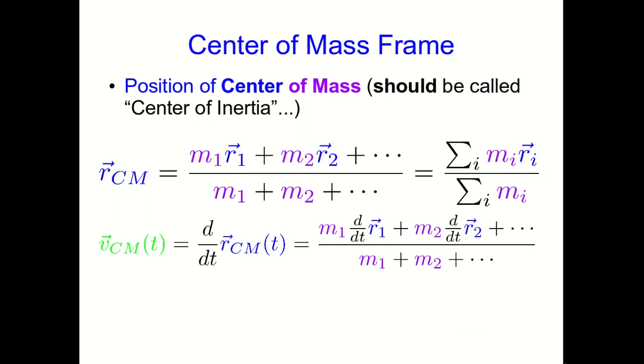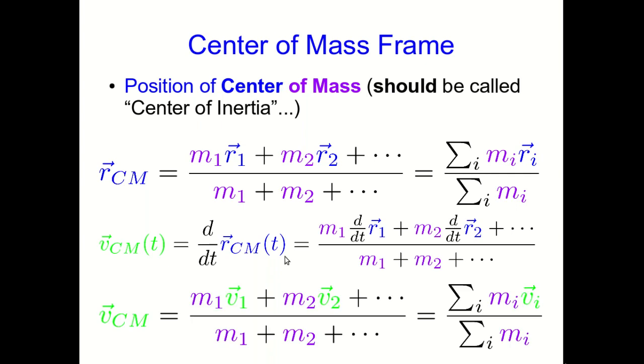Well, we know how to do that already. We already know the position, and it's a function of time, so we just take the time derivative, and now all of these dr by dt's up here are just the velocity vectors of the individual objects in the system.